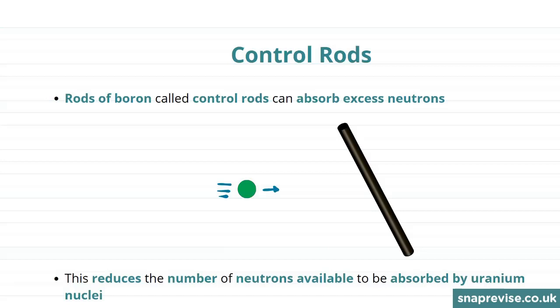So what if there's too many fusions happening and we want to decrease the number of fusions? Well we can use control rods for this.